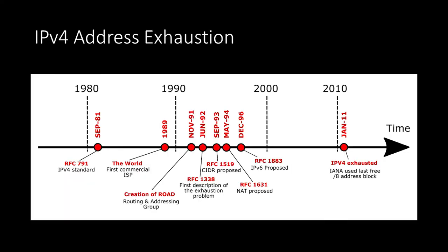Due to IP addresses being a 32-bit number, there is an upper limit of 2 to the 32, or roughly 4.2 billion addresses. While enormous at the time of the internet's creation, the wide adoption of it has caused these numbers to quickly deplete. By January 2020, all IPv4 addresses have been allocated between various ISPs around the world. This problem is called the IPv4 address exhaustion problem.